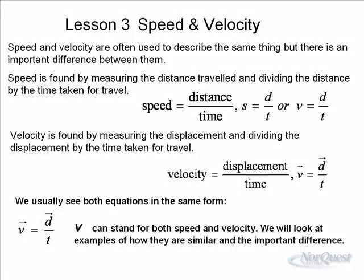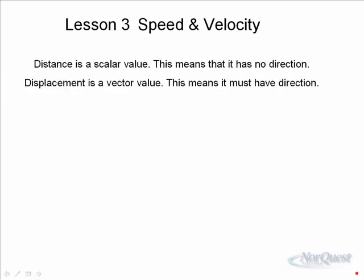Let's look at some examples of how they are similar and how they are different. The big difference between speed and velocity comes from the difference between distance and displacement. Distance is a scalar — scalars have no direction. Time and money are examples of scalars. Money cannot have direction. Temperature is another example of a scalar; you can have a positive or negative temperature, but you can't have a temperature that's 15 degrees north. However, displacement can be a vector.